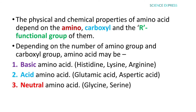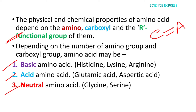The physical and chemical properties of amino acids depend on the amino, carboxyl, and R functional groups. Depending on the number of amino groups and carboxyl groups, amino acids may be basic, acidic, or neutral. If the number of carboxyl groups equals the number of amino groups, the nature of the amino acid is neutral. Examples of neutral amino acids are glycine and serine.